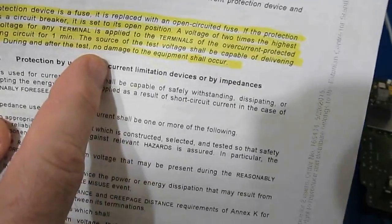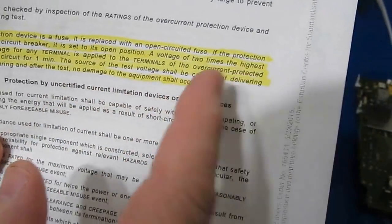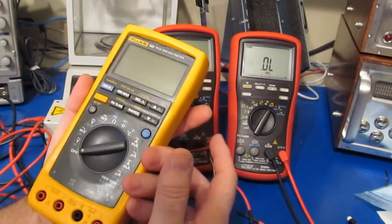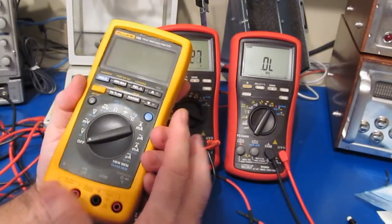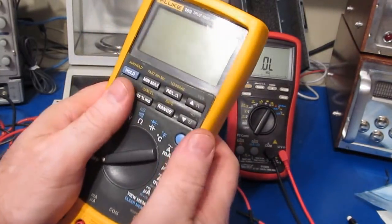During and after the test, no damage to the equipment shall occur. Now again, if you look at that new Fluke 87V that I purchased, the resistors that that meter has are quite large.